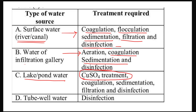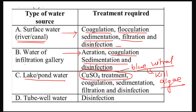Copper sulfate, also known as blue vitriol, is used to kill algae in lakes and ponds. The most important coagulant is alum. The water treatment sequence is: coagulation, sedimentation, filtration, and disinfection. For tube well water (ground water), only disinfection is sufficient — chlorine is applied.